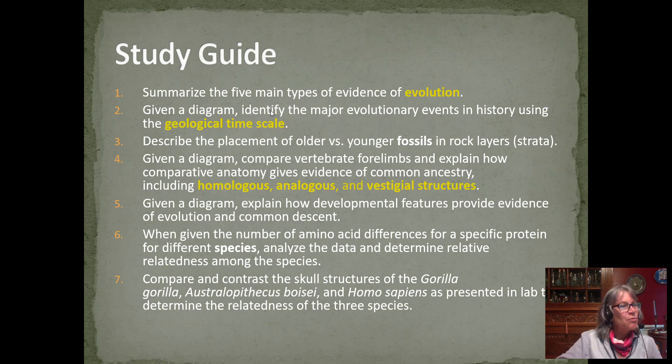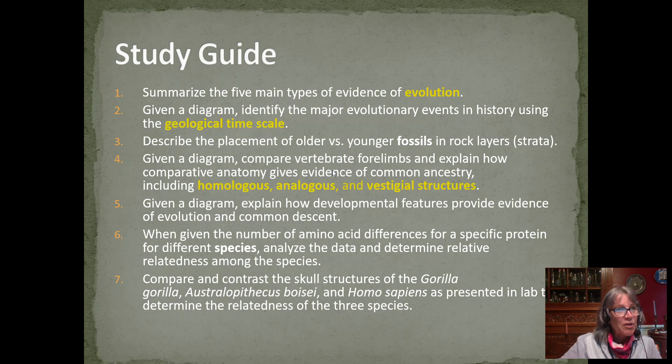Your study guide for this, the learning objectives: you should be able to summarize the five main types of evidence of evolution. Given a diagram, you should be able to identify major evolutionary events in history using the geological time scale. We're also looking at geological history and describes the placement of older versus younger fossils in rock layers. You should know the difference between homologous, analogous, and vestigial structures.